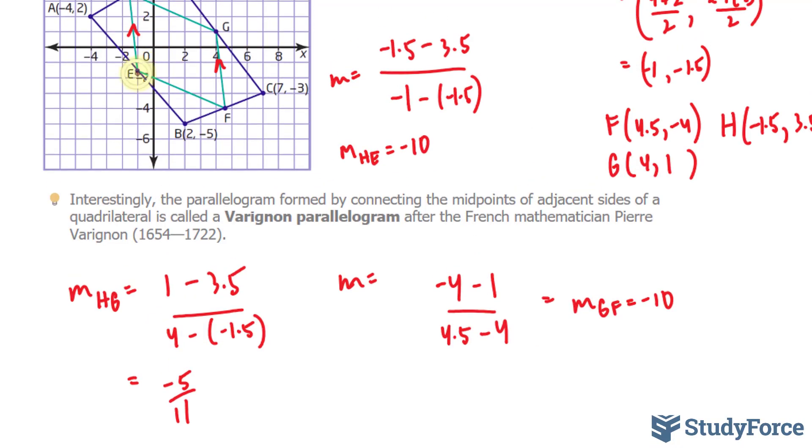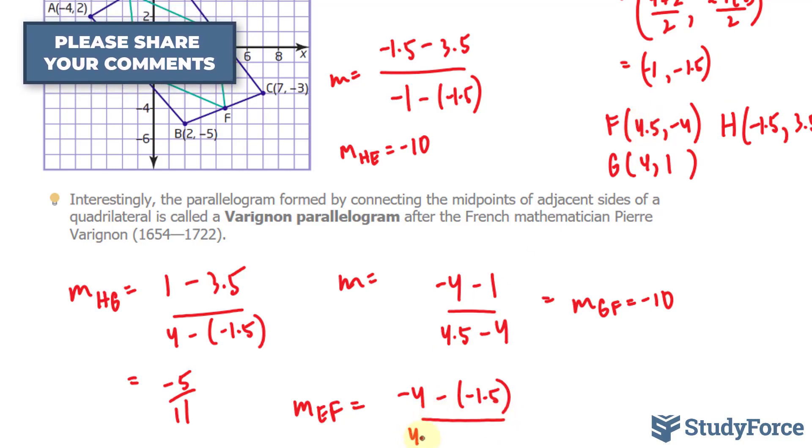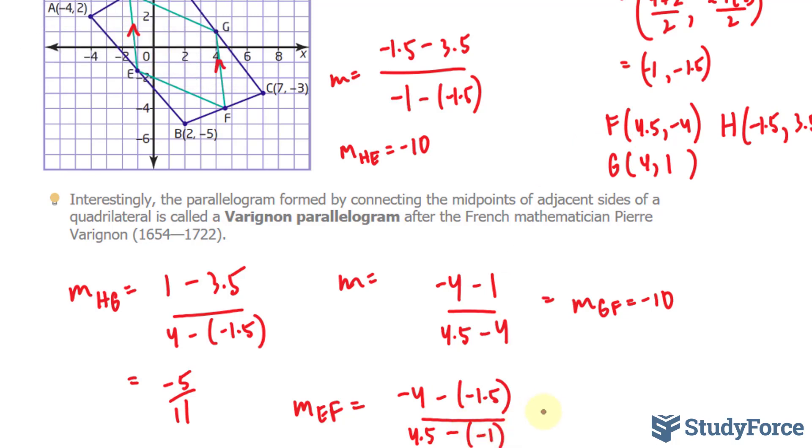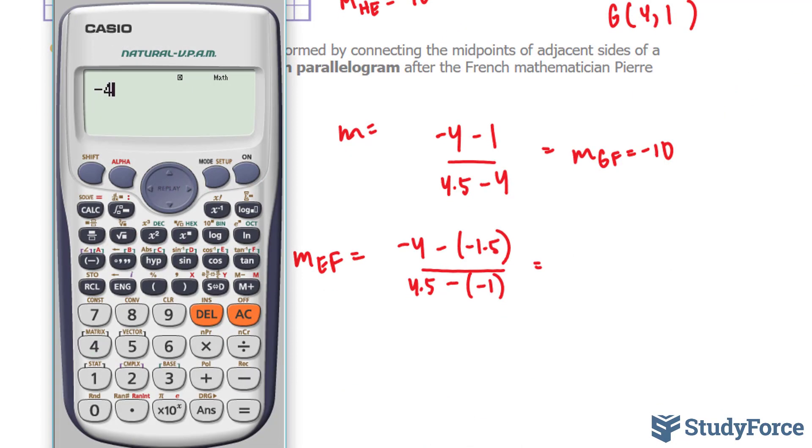Now, the slope between E and F. F is negative 4 minus E, which has a y-coordinate we found to be negative 1.5, over X2, 4.5 minus negative 1. Our calculator will give us negative 4 plus 1.5, divided by 4.5 plus 1. Once again, negative 5 over 11.